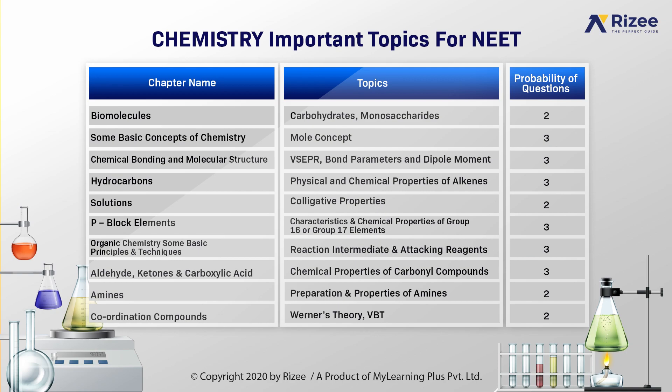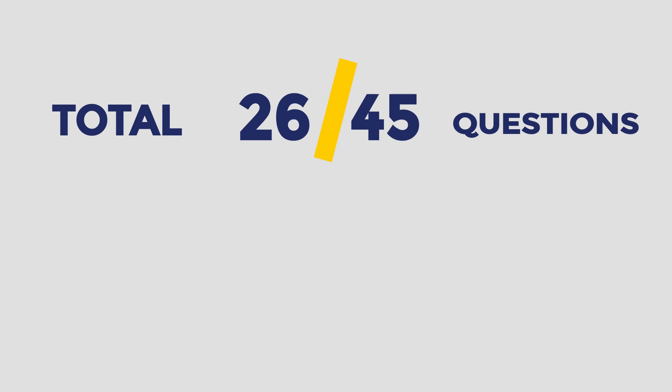And in organic chemistry some basic principles and techniques, important topic is reaction intermediates and attacking reagents. Probability of questions asked are 3. In aldehydes, ketones and carboxylic acids, chemical properties of carbonyl compounds is an important topic. And probability of questions asked are 3. In the chapter amines, important topic is preparation and properties of amines. And probability of questions asked are 2. In the chapter coordination compounds, important topics are Werner's theory and VBT. Probability of questions asked are 2 — 1 from Werner's theory and 1 from VBT you can expect. Total in chemistry, 26 questions of 45 are a probability of asking.